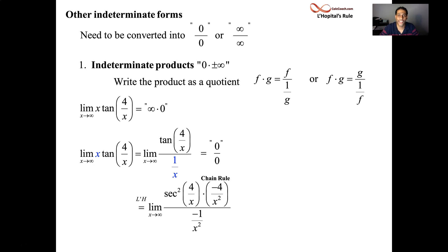When you did the chain rule for the numerator, you had negative 4 over x squared. When you took the derivative of the denominator, you had negative 1 over x squared. Those two can interact with each other. They can cancel. Not exactly, right? But negative 4 over x squared is 4 times negative 1 over x squared. They cancel to be a 4. So really, this function that you're taking the limit of is 4 times the secant of 4 over x quantity squared. What happens to 4 over x as x gets large? Goes to 0. What's the secant of 0? 1. 1 squared? 1. 1 times 4?